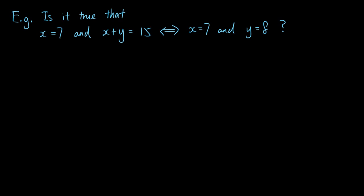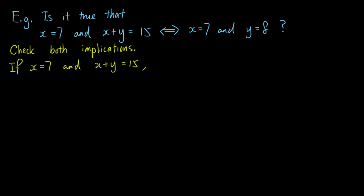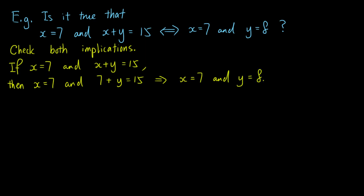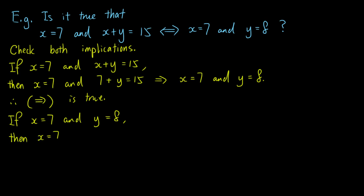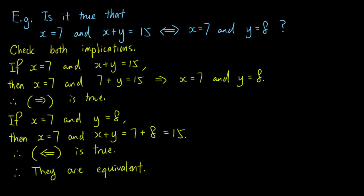Let's use another example to illustrate equivalence. Is it true that 'x equals 7 and x plus y equals 15' is equivalent to 'x equals 7 and y equals 8'? We check both implications. First, the only-if part: suppose x equals 7 and x plus y equals 15. Substituting x equals 7 gives 7 plus y equals 15, so y equals 8. Thus we have x equals 7 and y equals 8, so the only-if part is true. Now the if part: suppose x equals 7 and y equals 8. Then x plus y equals 7 plus 8 equals 15, so we have x equals 7 and x plus y equals 15. The if part is also true. Hence the two predicates are equivalent.